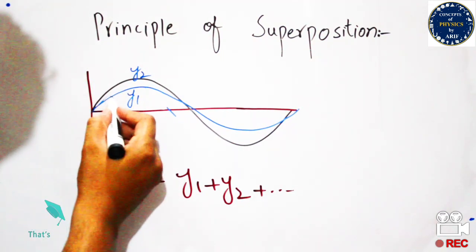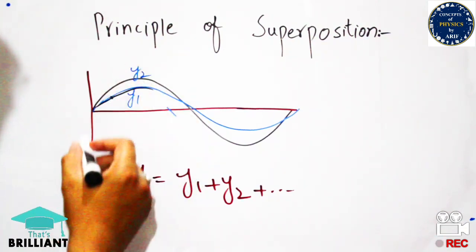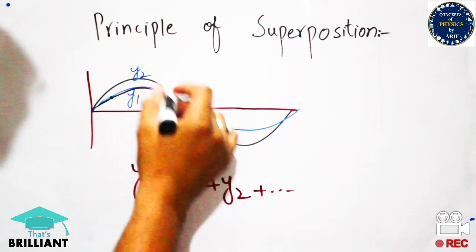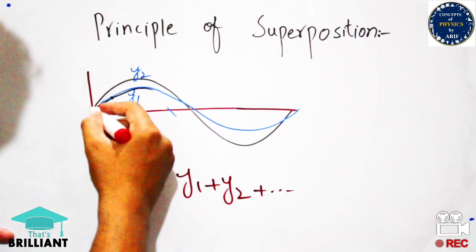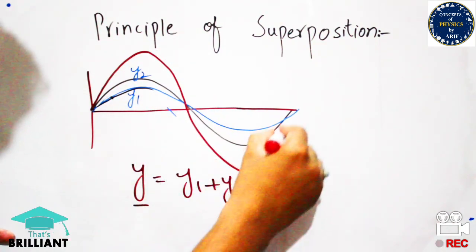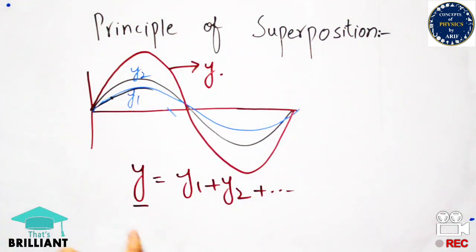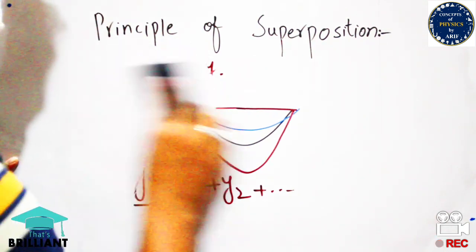If these waves are in phase — meaning the crest of one wave aligns with the crest of another wave — it is known as an in-phase wave. Otherwise it will be an out-of-phase wave. When these two sinusoidal waves are in phase, their resultant is reinforced as y1 plus y2. This is known as the principle of superposition.